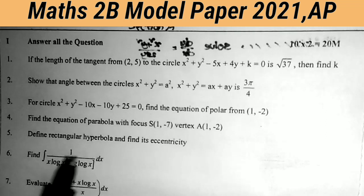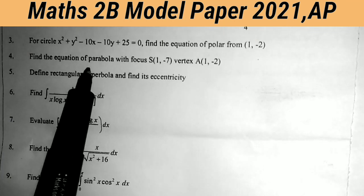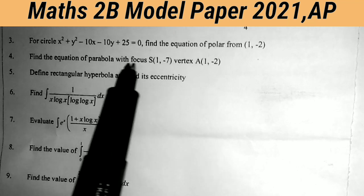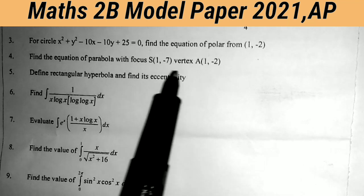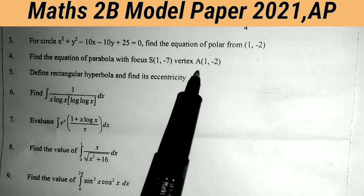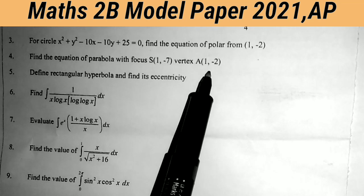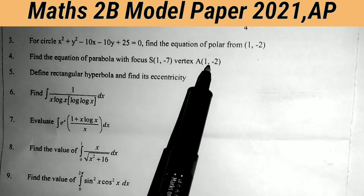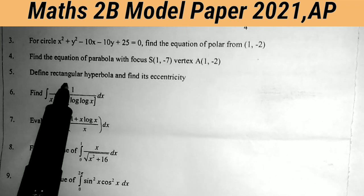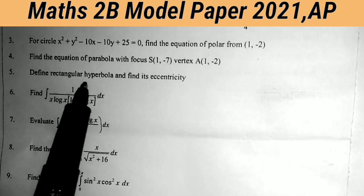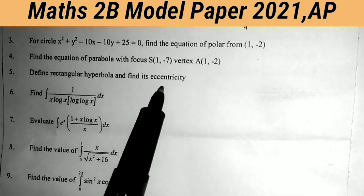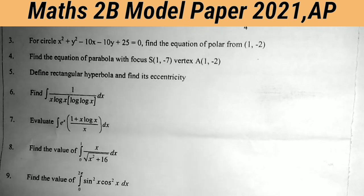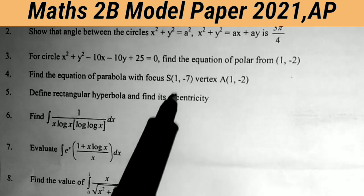Fourth question: find the equation of the parabola with focus (1, −7) and vertex (1, −2). This is a most important 2-mark sum from parabola. Fifth question: define rectangular hyperbola and find its eccentricity. This is a most important sum from hyperbola.